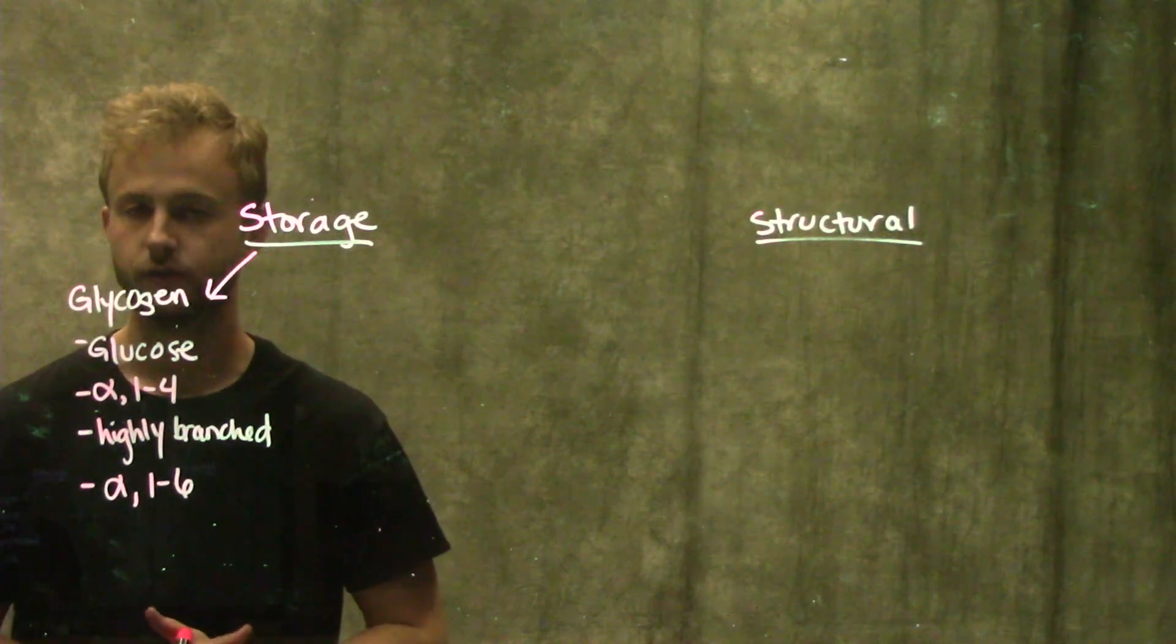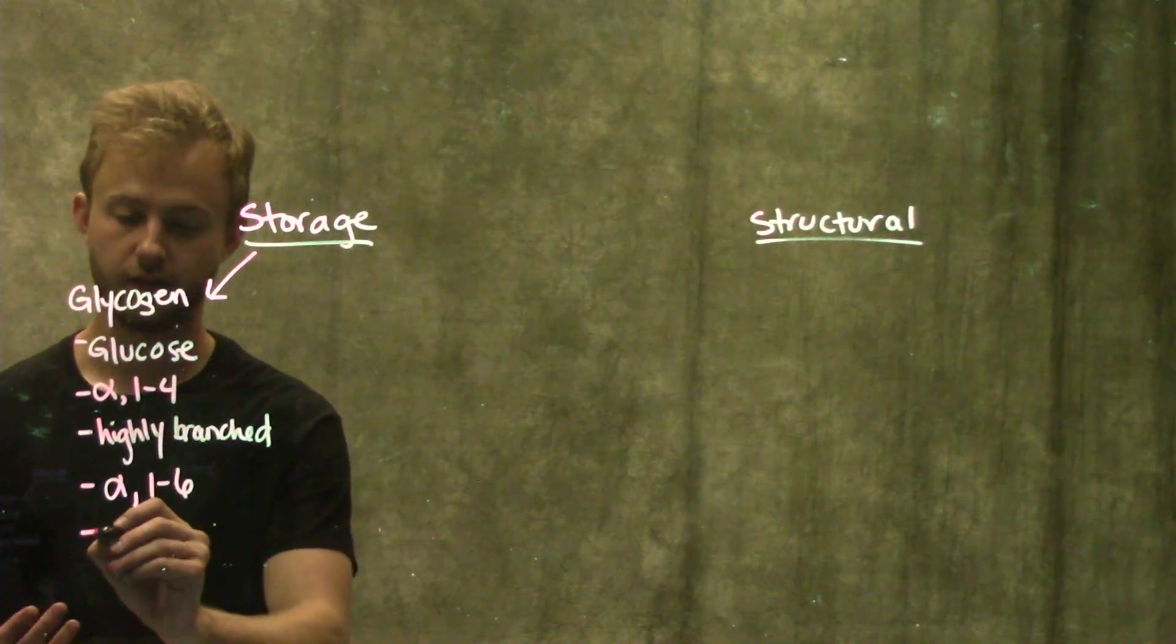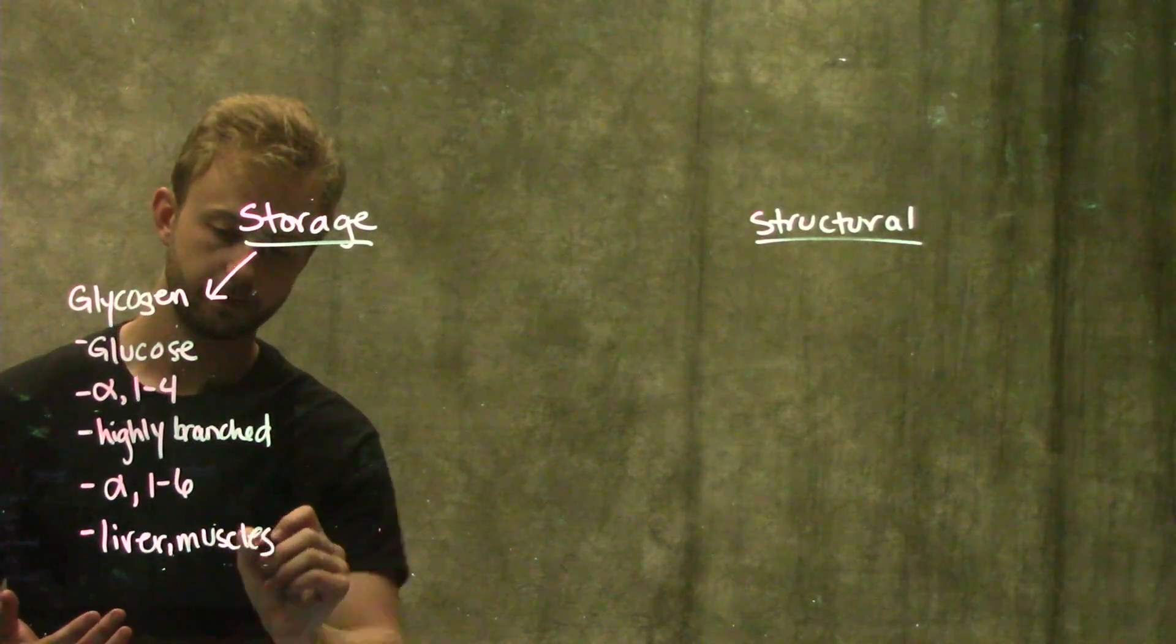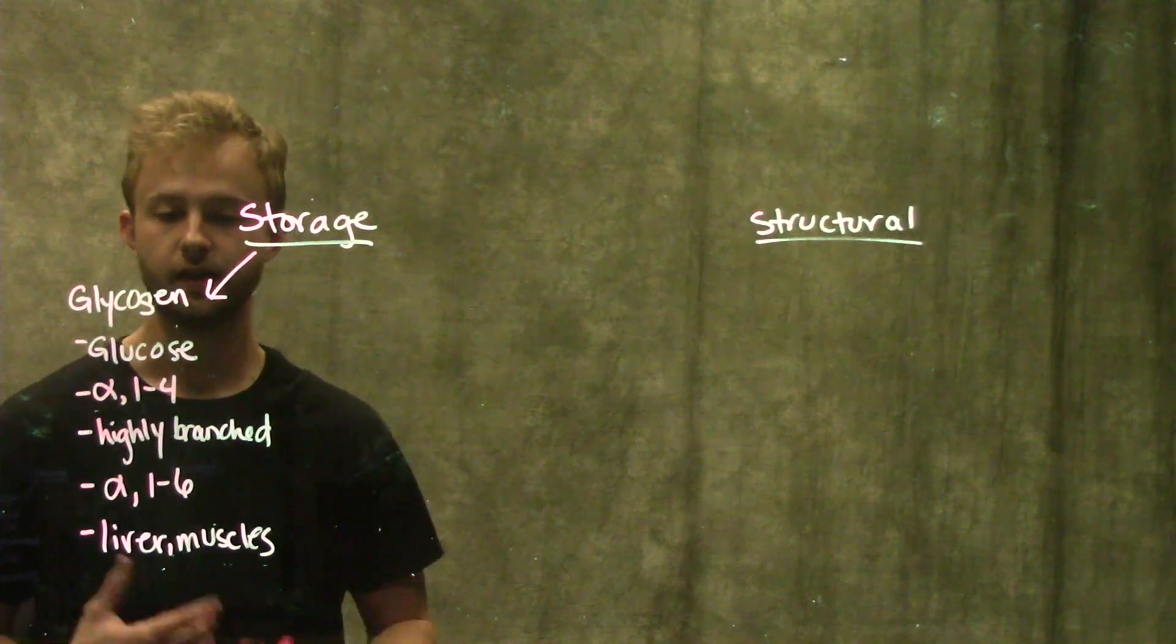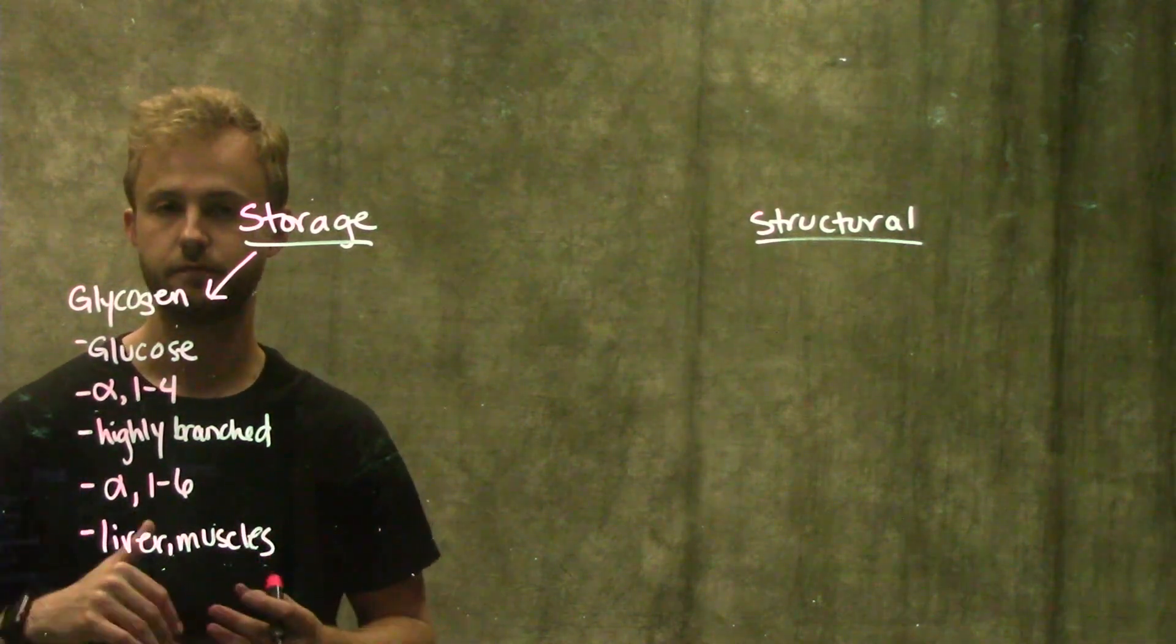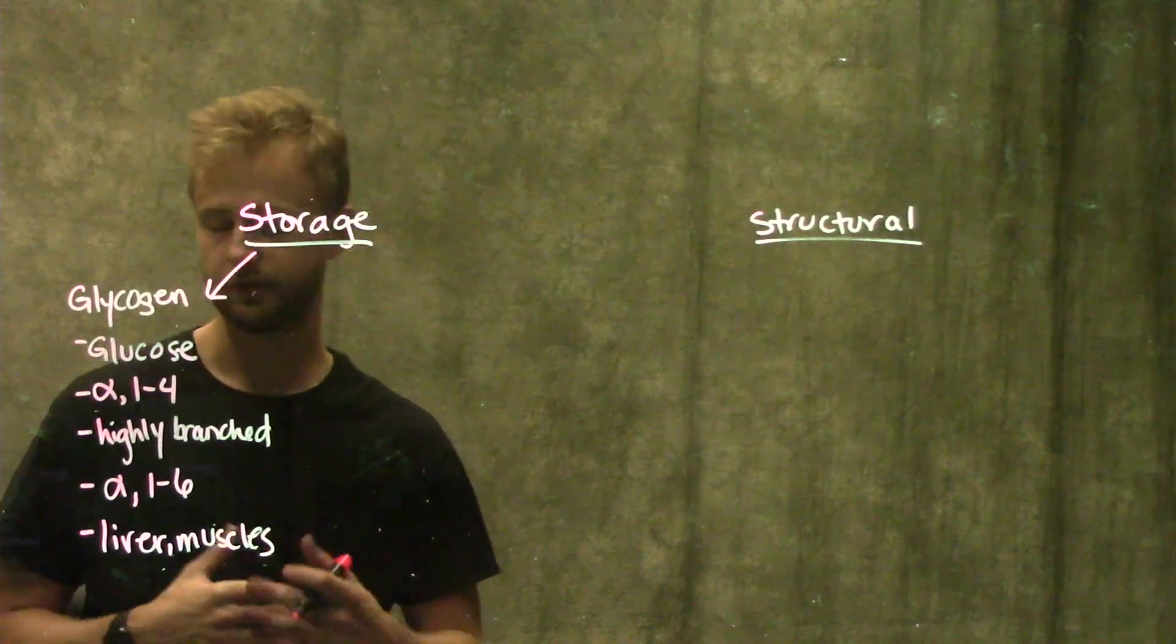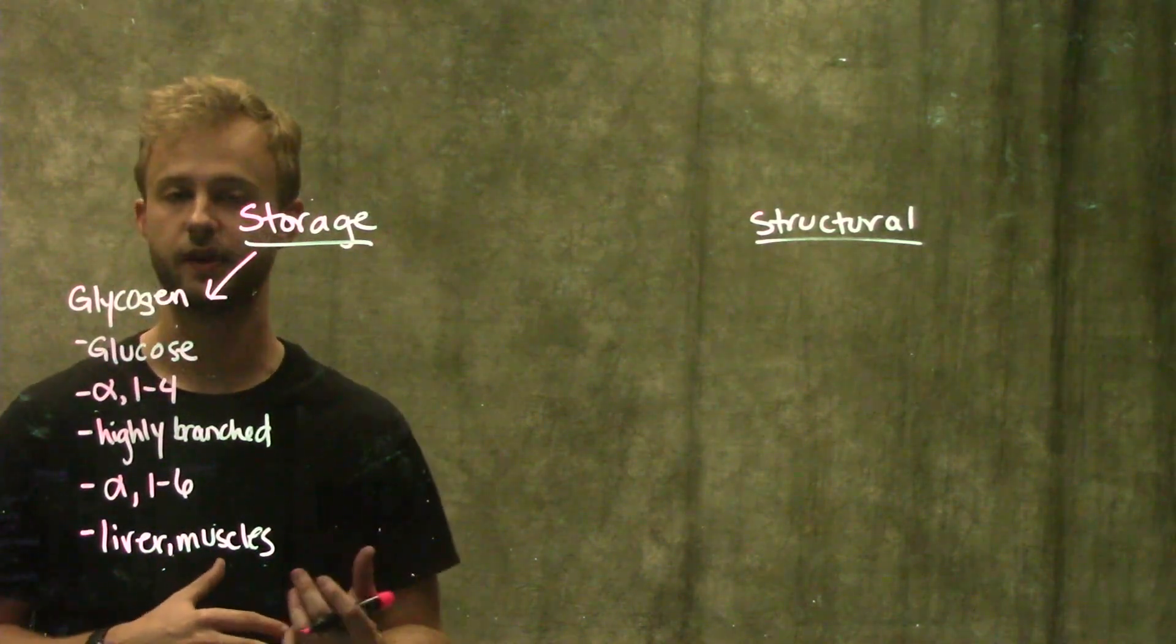Glycogen is typically stored in the liver and in the muscles. That's the basic information you need to know about glycogen. Now we can move on to what we find in plants.